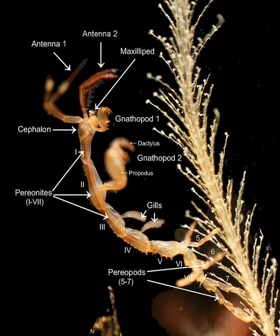Comparative morphology is analysis of the patterns of the locus of structures within the body plan of an organism, and forms the basis of taxonomical categorization. Functional morphology is the study of the relationship between the structure and function of morphological features. Experimental morphology is the study of the effects of external factors upon the morphology of organisms under experimental conditions, such as the effect of genetic mutation.